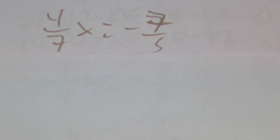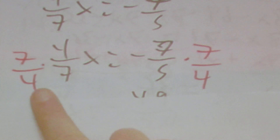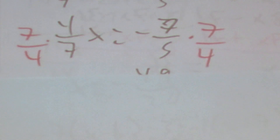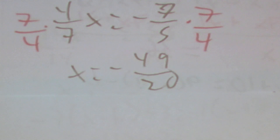Then we'll have one with fractions: (4/7)x = −7/5. Whenever we have a fraction like this, we multiply both sides by the reciprocal — just flip the fraction — so multiply both sides by 7/4. We get x = (−7 × 7) / (5 × 4) = −49/20.